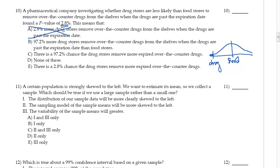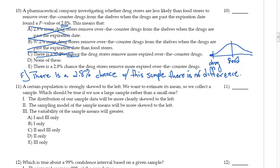97.2 percent more drug stores remove... Okay, so again this is talking about population and we can't use that. There's a 97.2 percent chance that the drug stores remove more expired over-the-counter drugs. Now the chance word is here, but it's not that the drug stores remove more expired—it's that there's a difference, that there's no difference. There is a 2.8 percent chance that there's no difference, that there is a 2.8 percent chance with this sample there is no difference, the no difference coming from the null hypothesis. So this is the sentence that we're looking for.